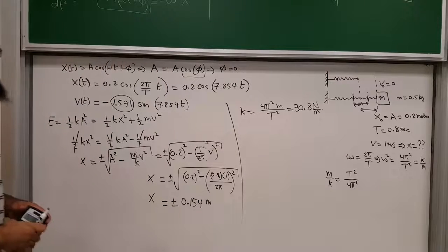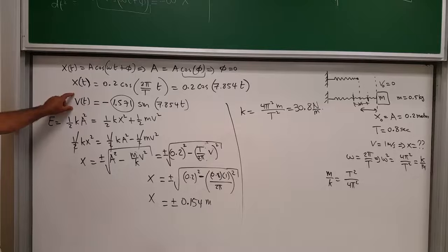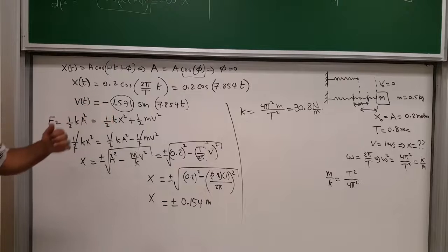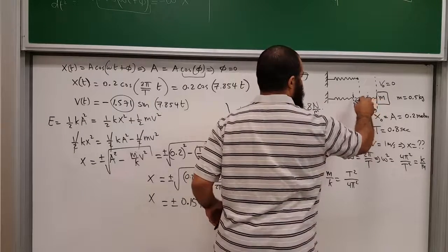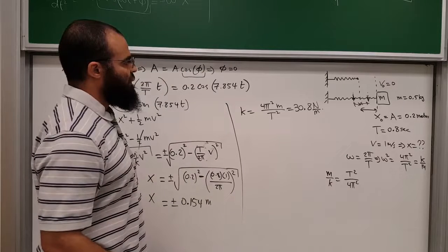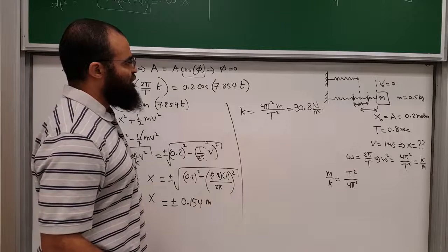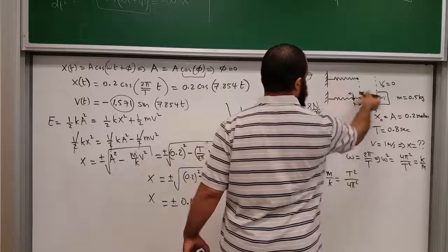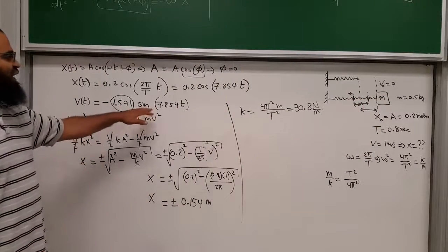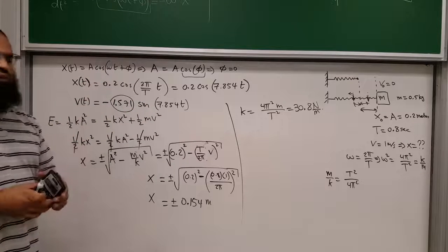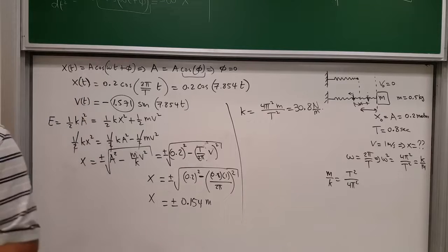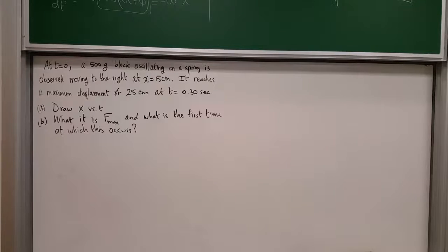We could have also found the positions by solving v(t) = ±1 from the velocity equation directly — finding the times when v equals +1 or −1 and then plugging into x(t). However, that approach requires dealing with inverse trig functions and is more error-prone. The energy method used here is easier and less likely to produce mistakes.